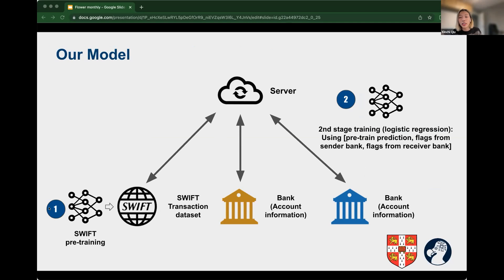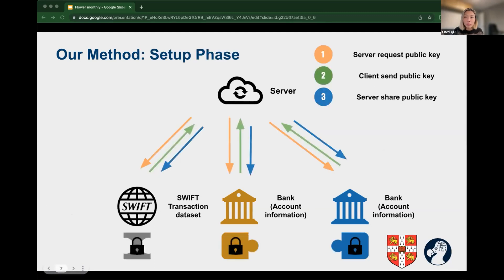In terms of the model, our main solution consists of two parts. The first part involves a pre-training phase in Swift, because it has all the transaction information and the label. Pre-training models allow us to extract valuable information or embeddings from the raw data without directly sharing any private information with the server or third parties such as banks. In the second part, we use logistic regression to train the final predictions. This can be easily replaced with any other neural network-based model in the future.